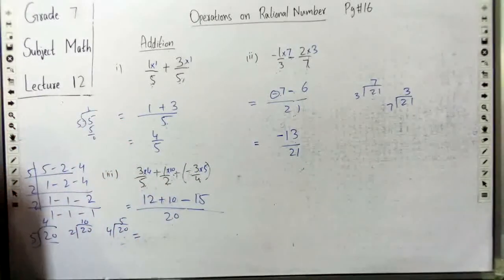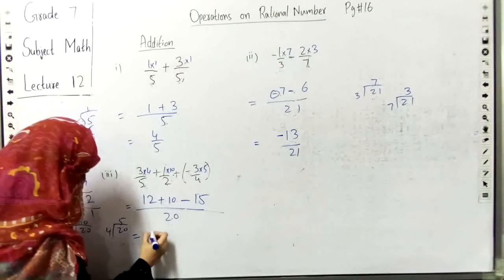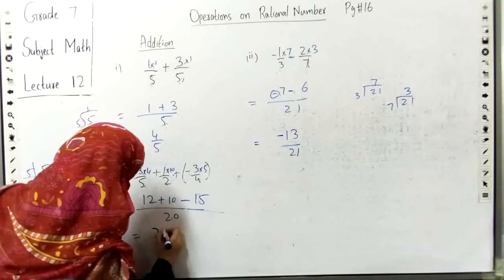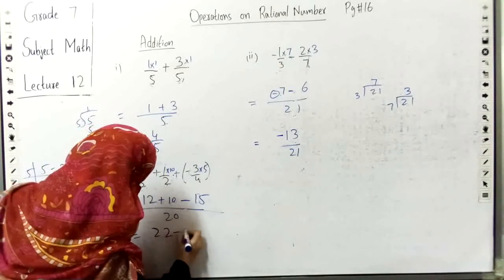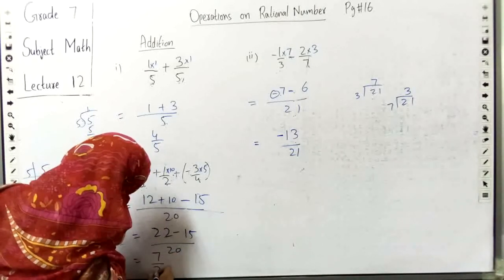So now we have to solve 24 plus 10 minus 15. 24 plus 10 is 34, 34 minus 15 is 19. Wait, 12 plus 10 is 22, 22 minus 15, answer is 7 by 20.